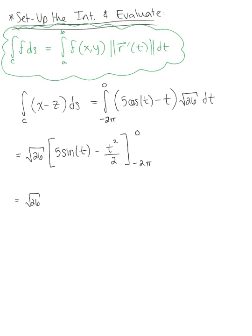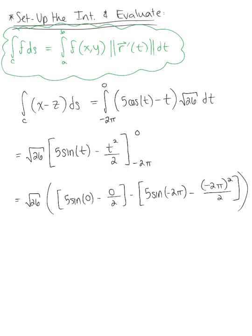So I have the square root of 26 multiplied by 5 sine of 0 minus 0 by 2 minus 5 sine of negative 2 pi, minus a negative 2 pi squared over 2. So now sine of 0 goes to 0, sine of negative 2 pi also goes to 0.